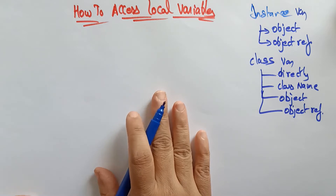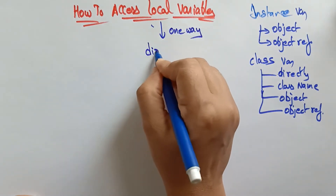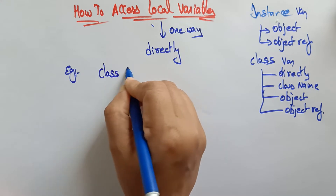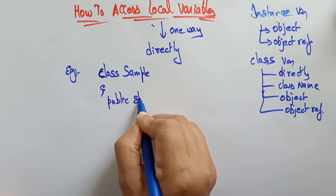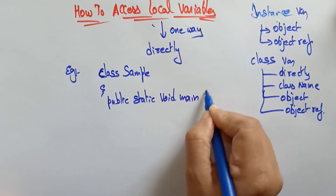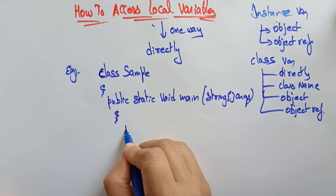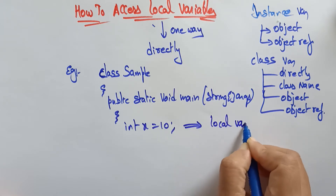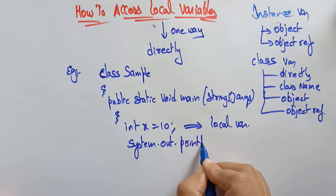Now let's see how to access local variables. There is only one way to access local variables — directly — because local variables have no life outside their scope. For example: class Sample, public static void main String arguments, and inside the main method you declare a variable, which is called a local variable.